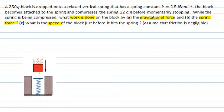We're given a bit of information here. We know that it's a 250 gram block, so that's going to be 0.25 kilograms. We're also told that this spring has a spring constant of 2.5 newtons per centimeter. To convert, I need to multiply by 100 centimeters per meter to get newtons per meter, so that's 250 newtons per meter for the spring constant.